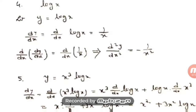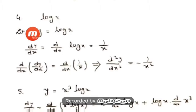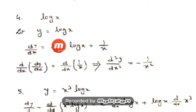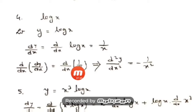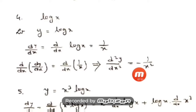Question number 4: log(x). Let y = log(x). Take derivative: dy/dx = d/dx of log x = 1/x. First derivative done. Next, d/dx of (dy/dx) = d/dx of (1/x), and we know d/dx of (1/x) = −1/x². So d²y/dx² = −1/x².